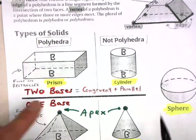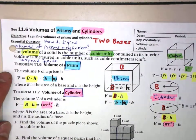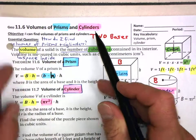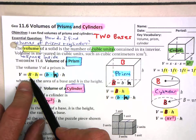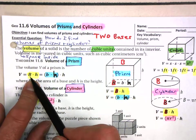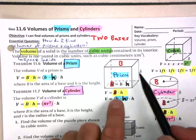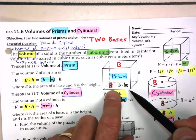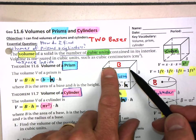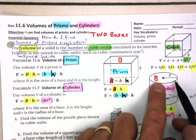Prisms and cylinders have two bases, and pyramids and cones only have one base. So when we did the volume of prisms and cylinders, we had this very simple formula: volume equals capital B times height. Capital B refers to the area of the base, so we just found the area of the base and multiplied it times the height.